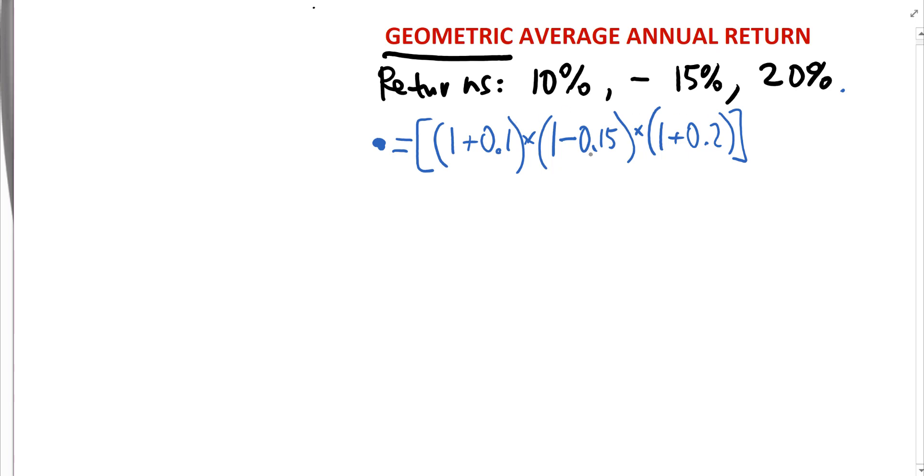And then the whole thing, the whole product of these three terms, is taken to the power of one third, where three is always the number of the returns that are given to you. And then you subtract one. So if you do the math this way, you will get 3.91%. This is the answer.